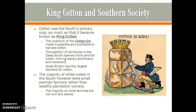Cotton was the South's primary crop, so much so that the South became known as King Cotton. The invention of the cotton gin made it possible and profitable to harvest cotton at a higher rate and lower cost. The addition of territories in the Deep South, mainly from the Louisiana Purchase, opened more land for cotton, moving slavery southward and westward. As the East Coast filled up, people moved west for more farmland, and Great Britain had the largest demand for cotton, making it one of the South's greatest allies. However, the majority of white males in the South were small yeoman farmers who only farmed enough for their own families, and most white families did not even own any slaves.